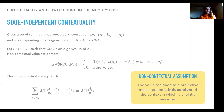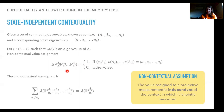Now I'll briefly explain contextuality in the sense of the Abramsky proof we are using. Given a set of commuting observables and a set of corresponding eigenvalues, let n be the function that maps observables to eigenvalues. The non-contextual value assignment applied to a sequence of projective measurements is one if the eigenvalues match the outcomes, and zero otherwise. The non-contextual assumption is that the value assigned to a projective measurement is independent of the context in which it is jointly measurable.